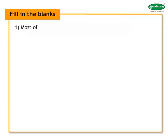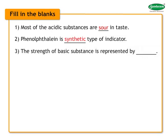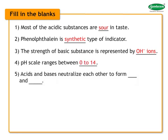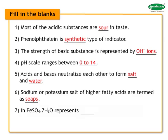Fill in the blanks. One: most of the acidic substances are sour in taste. Two: phenolphthalein is a synthetic type of indicator. Three: the strength of a basic substance is represented by OH minus ions. Four: pH scale ranges between zero to fourteen. Five: acids and bases neutralize each other to form salt and water. Six: sodium or potassium salt of higher fatty acids are termed as soaps. Seven: in FeSO₄·7H₂O, the 7H₂O represents water of crystallization.